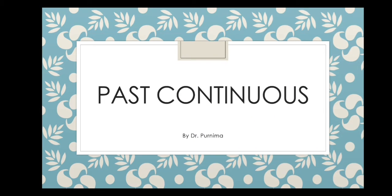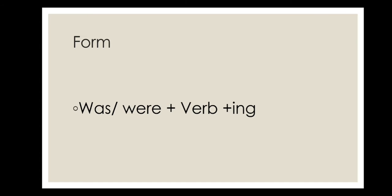Learn past continuous tense. The form of past continuous tense is was or were plus verb plus ing. Verbs are doing words like go, come, sing, dance, play, etc.